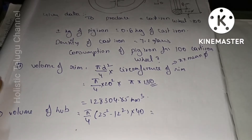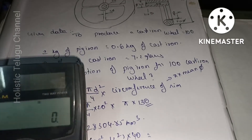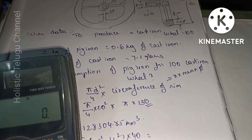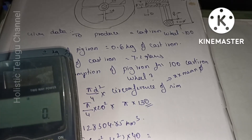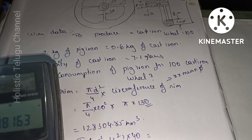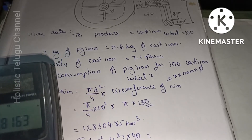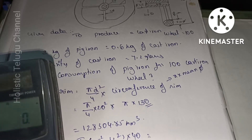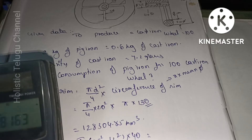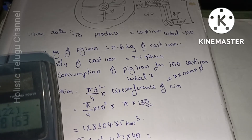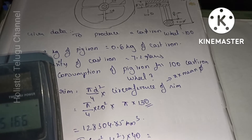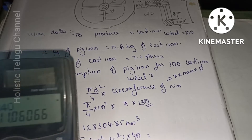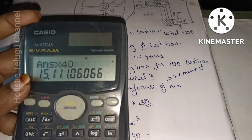Let's calculate: π/4 × (25² − 12²) × 40. That gives us 111.0 mm³ — so the volume of the rim is 111 mm³.